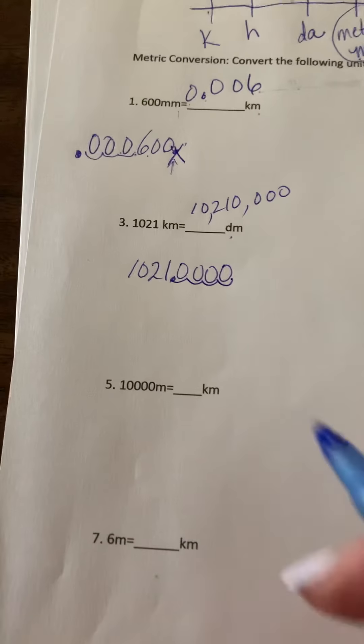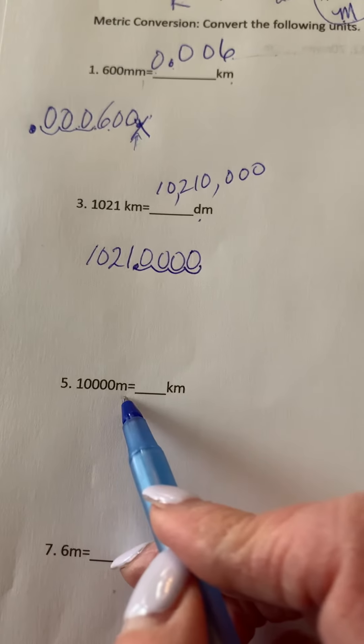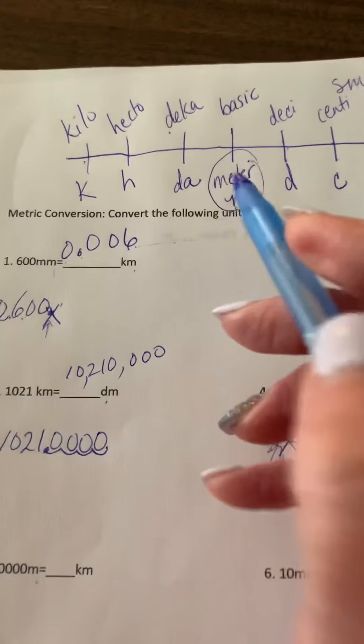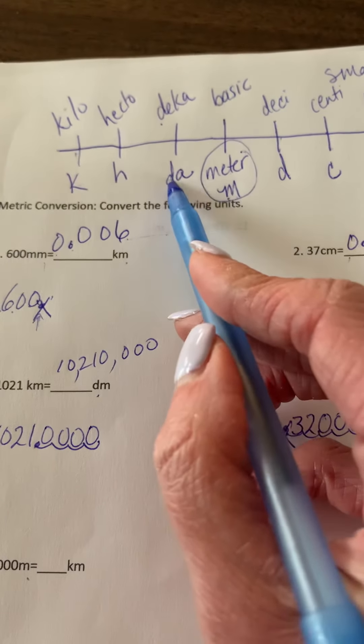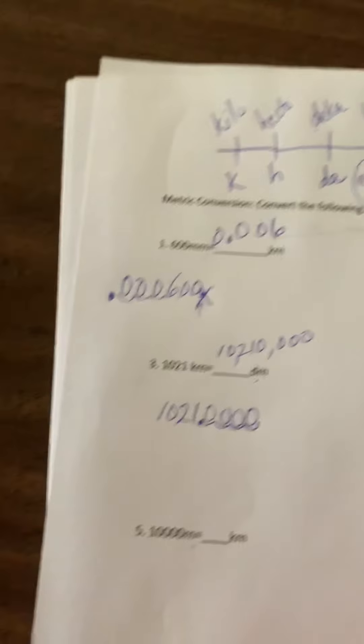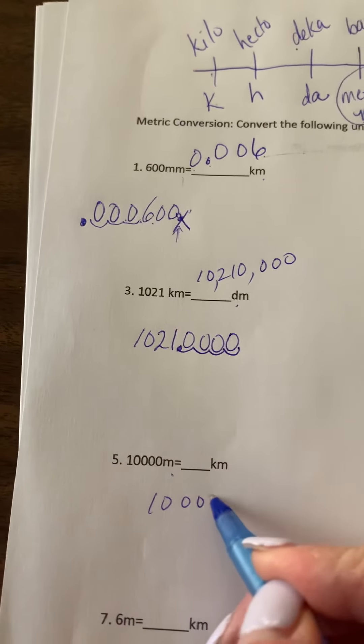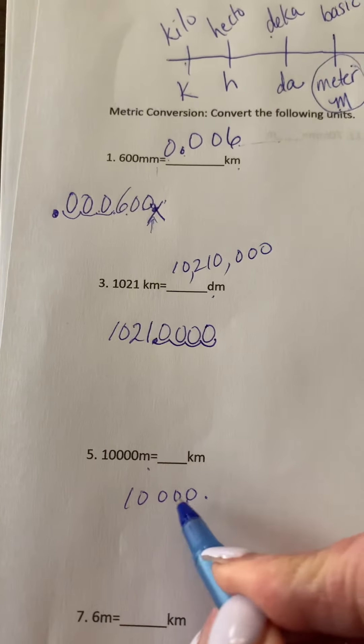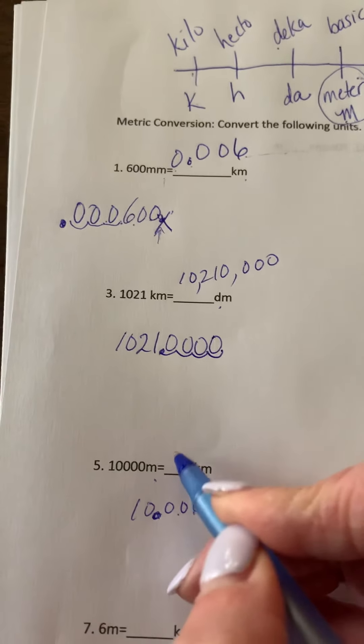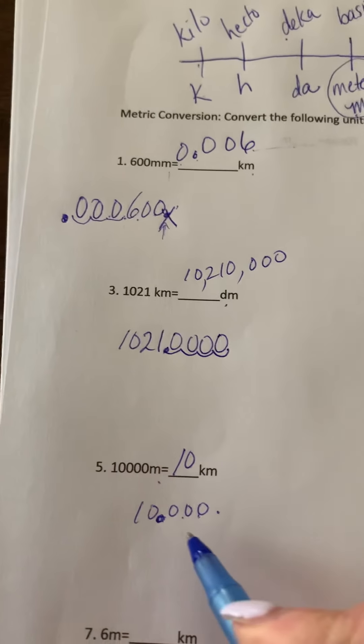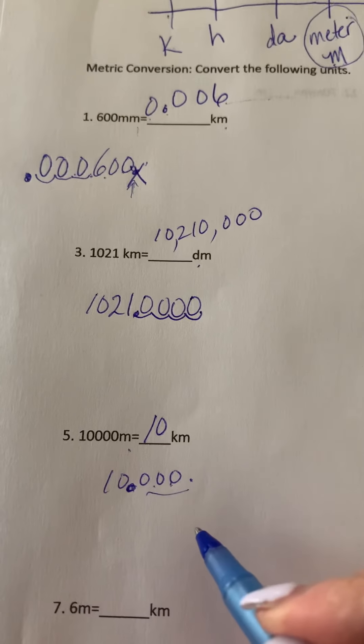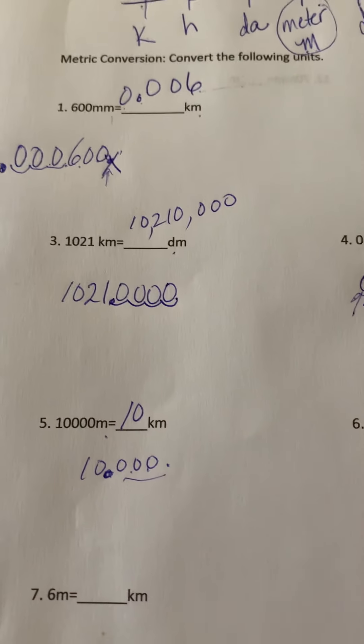Question number five. We're moving from 10,000 meters to kilometers. So if we take a look up here, meters to kilometers, one, two, three to the left. Original decimal is at the end of a whole number. One, two, three. There's our new number. And that would simply be 10. These would become redundant. We wouldn't need these numbers behind. We would just say 10 kilometers.